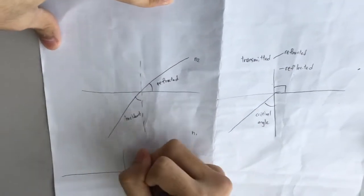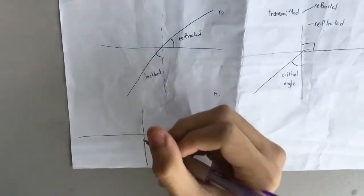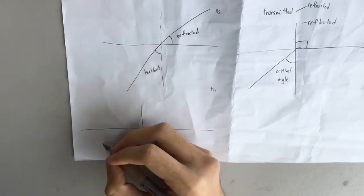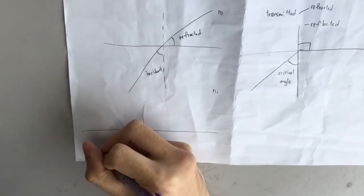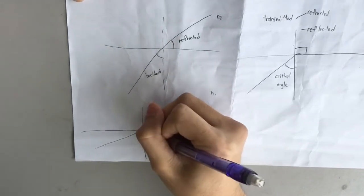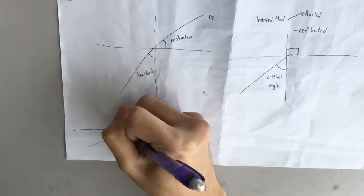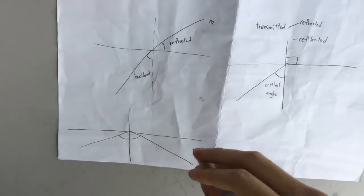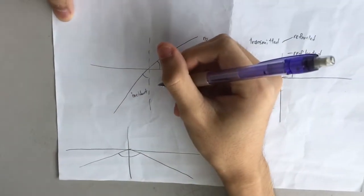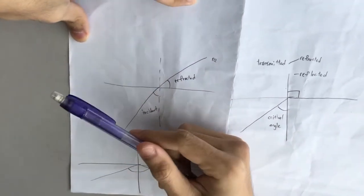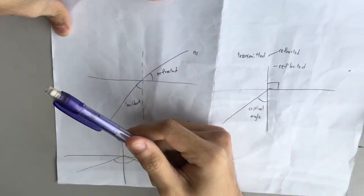So after that, when we increase the incident angle, when the incident angle is greater than the critical angle, and this is how it occurs in the optical fiber. So now I will pass to Ka Chun to proceed with the propagation part.